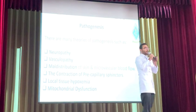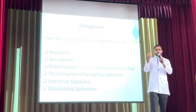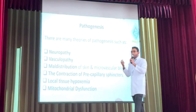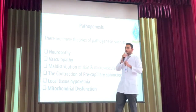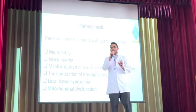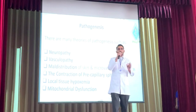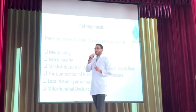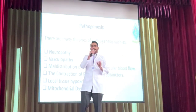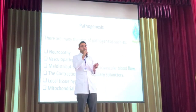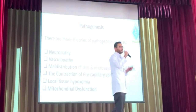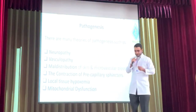Due to ischemia, the tissue also captures no oxygen — this is known as hypoxia. Due to hypoxia, the oxidative phosphorylation process will be reduced and ATP will not be produced. In this way, the myocardium will be damaged.